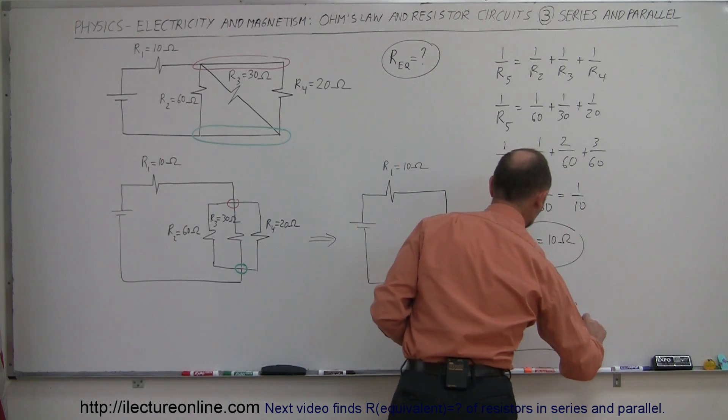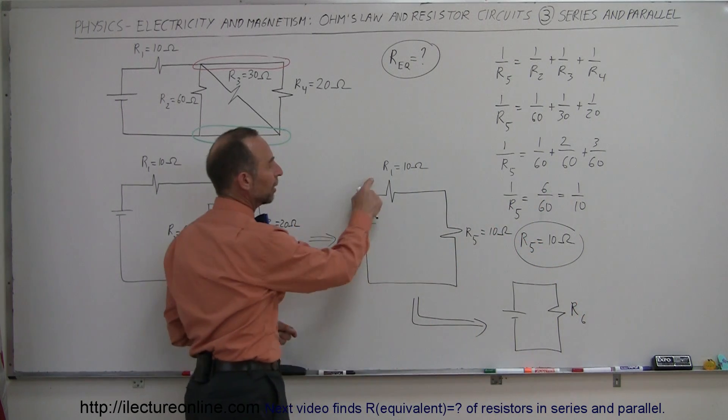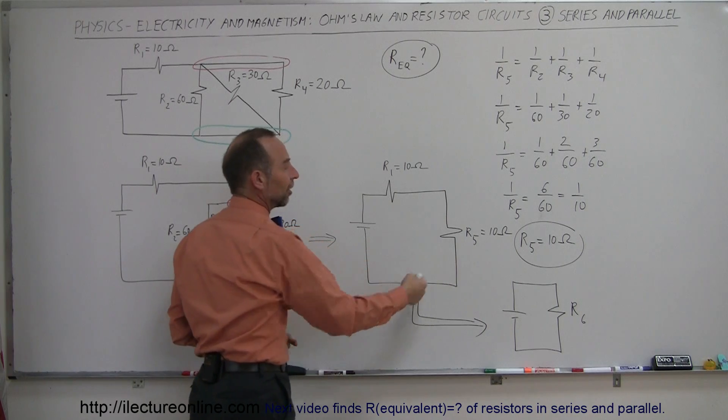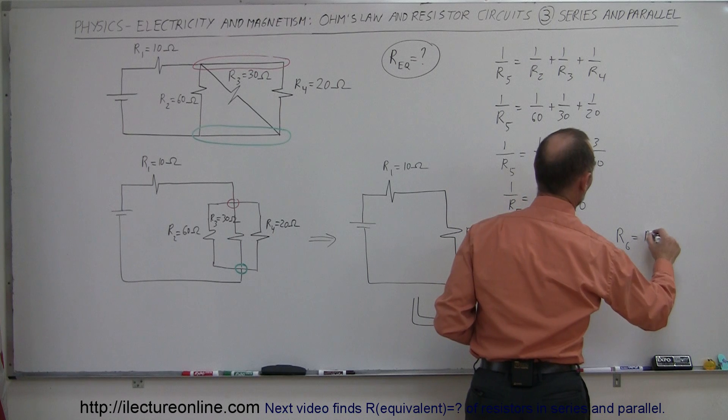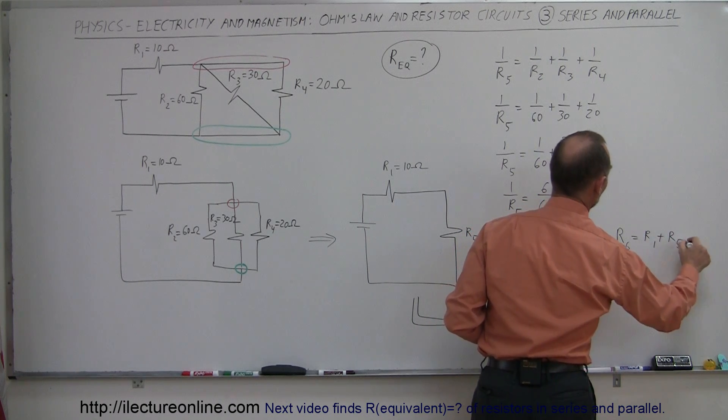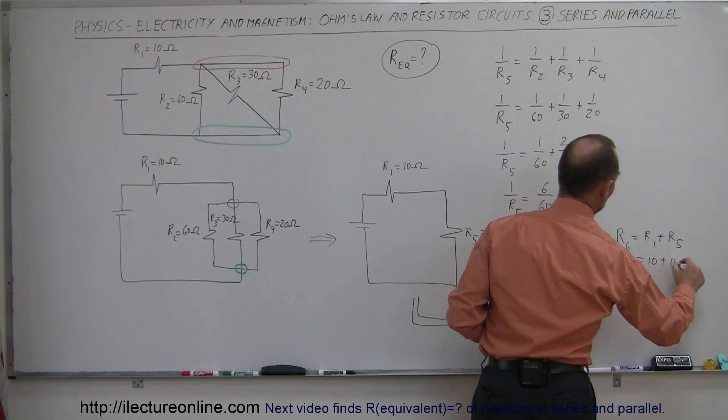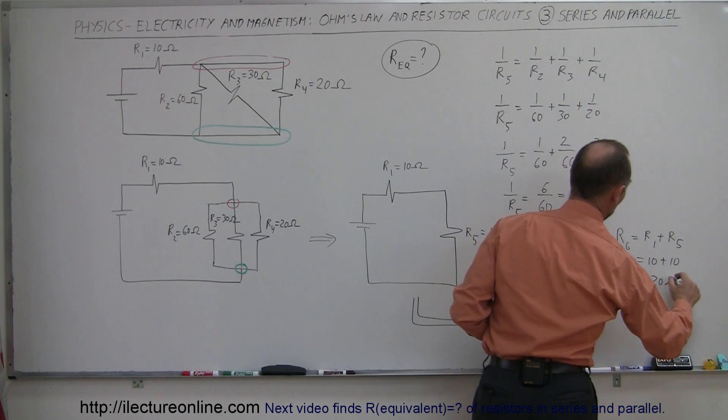Notice since R1 and R5 are now in series, we simply have to add those together. So we can say that R6 is equal to R1 plus R5, which is 10 ohms plus 10 ohms, which is 20 ohms.